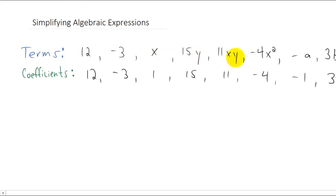This x, this y, this x, this y, this a, this b, this x squared. Those are all called variables.